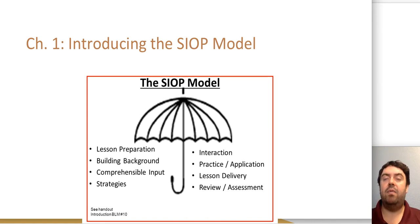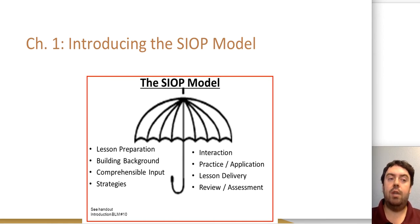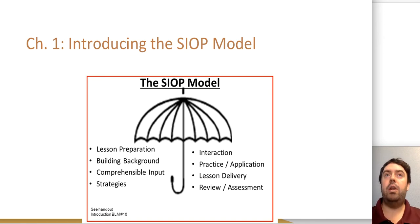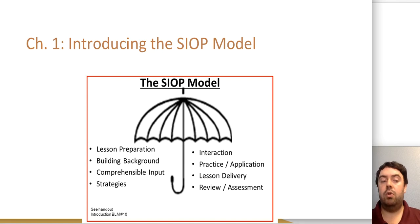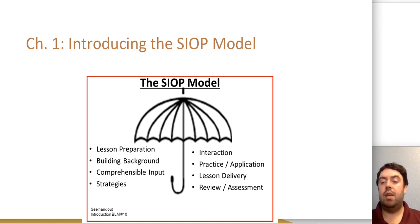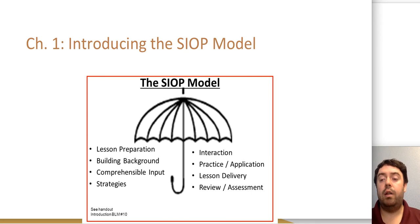which is basically activating students' prior knowledge; comprehensible input, which is making sure you're providing instruction that students understand and that's meaningful for students at different language levels; strategies, particular techniques to support students' learning; interaction, how you can support students' collaboration and discussion, building their oral language skills; practice and application; delivering your lesson; and finally having a review at the end of your lesson where you discuss key topics and objectives; and then assessment, where you evaluate whether students were successful in learning the content.